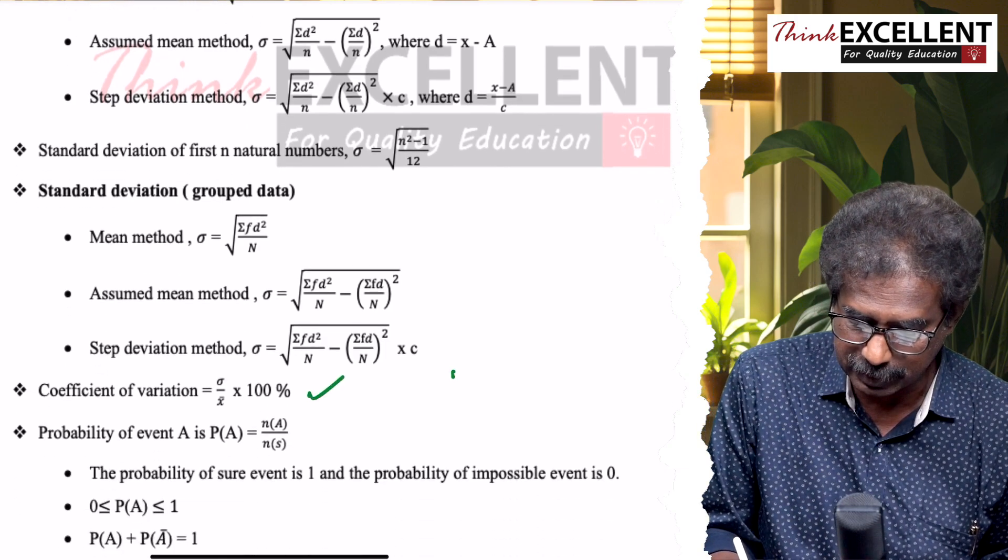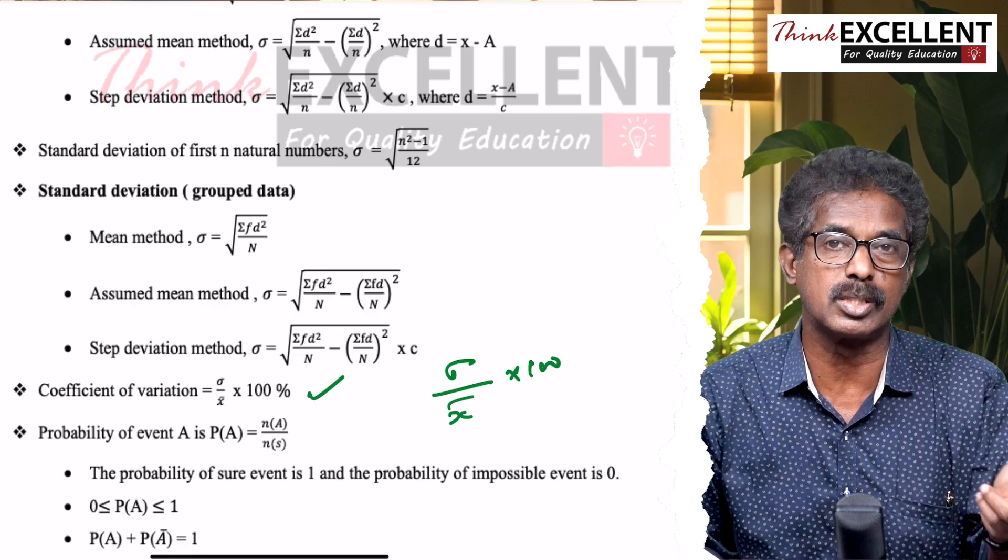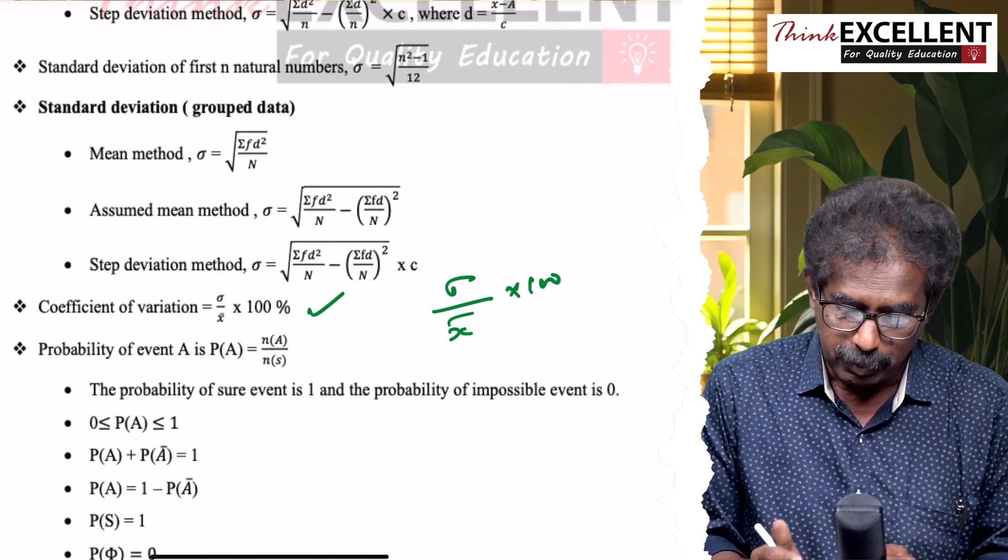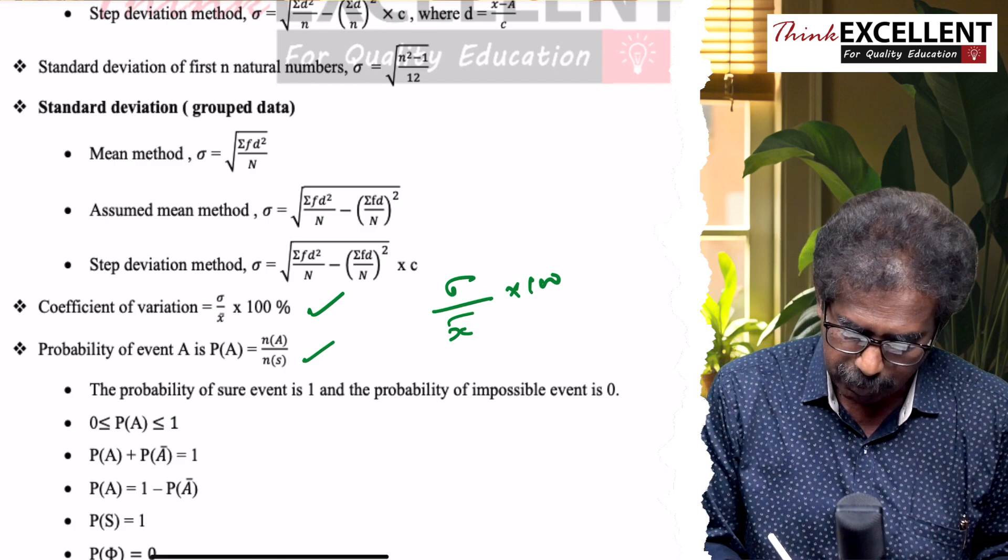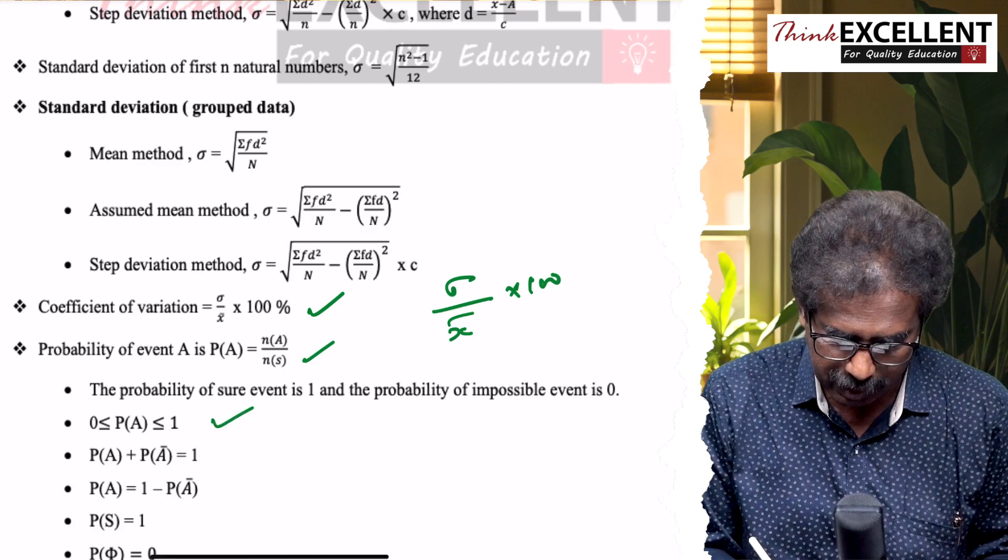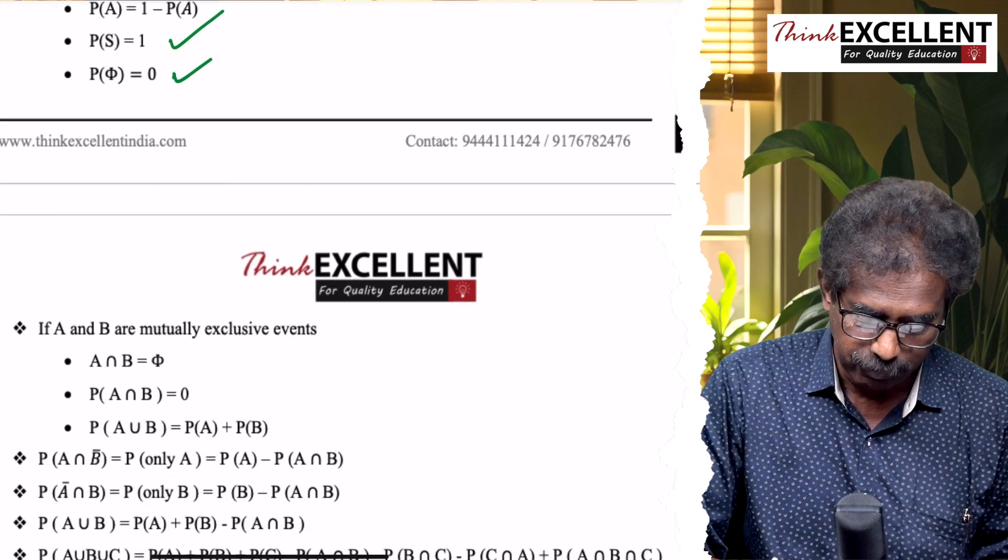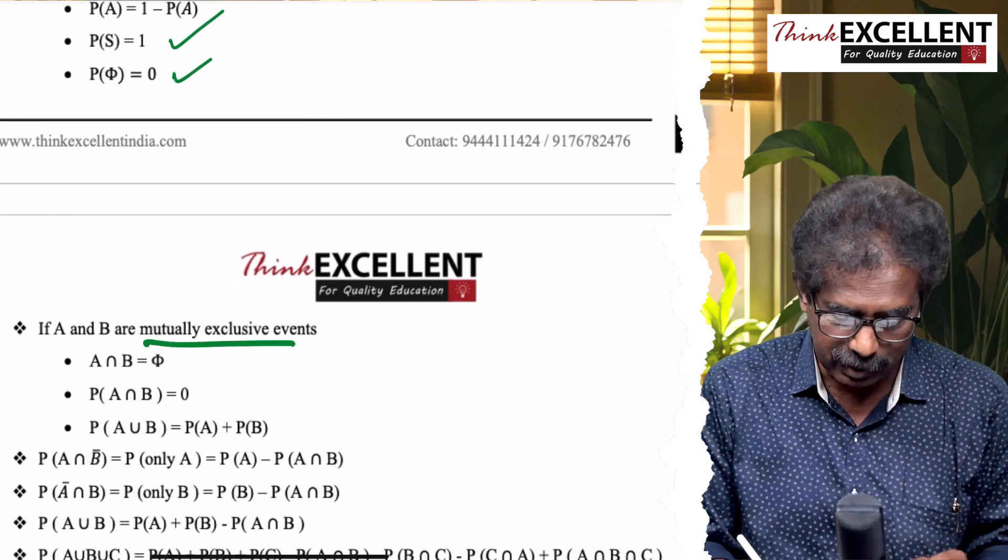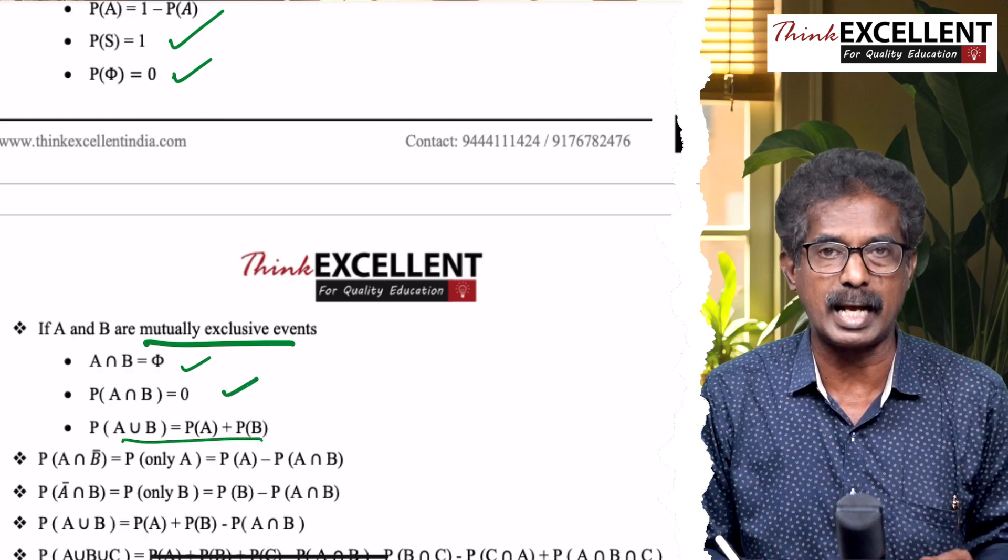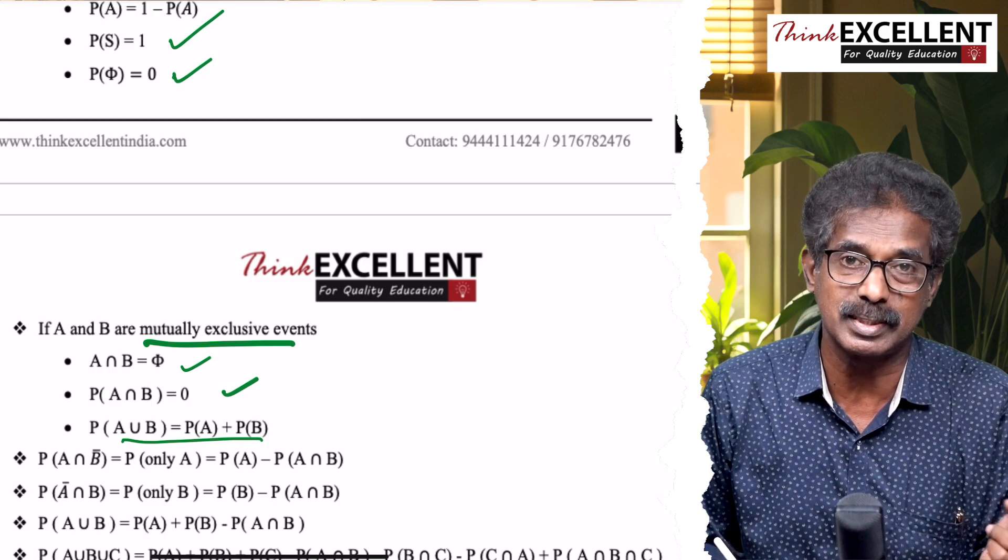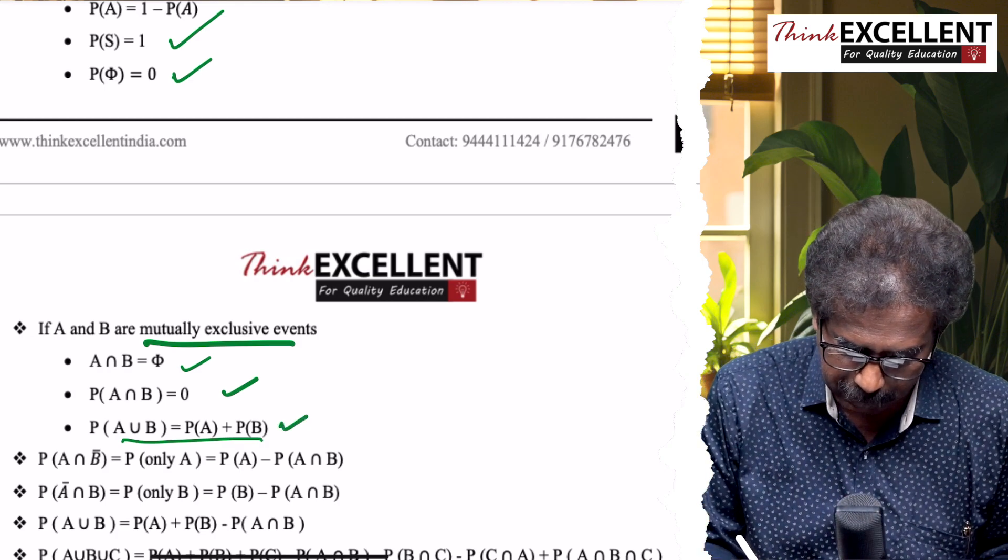Coefficient of variation: (σ/x̄) × 100. σ is standard deviation. Sometimes variance is wrong - variance, take square root to get standard deviation. Probability: P(A) = n(A)/n(S). Denominator is total cases, numerator is favorable. Probability lies between 0 and 1. P(A) + P(A') = 1. Probability of sure event is 1. Impossible event is 0. Then mutually exclusive: nothing is common, so A∩B = empty set. P(A∩B) = 0. P(A∪B) = actual addition theorem: P(A) + P(B) − P(A∩B). But mutually exclusive, P(A∩B) = 0, so P(A∪B) = P(A) + P(B).